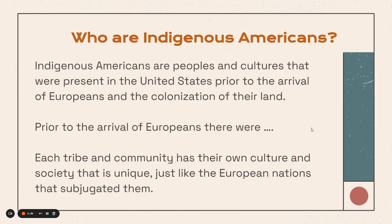Who are Indigenous Americans? They are people and cultures that were present in the United States prior to the arrival of Europeans and the colonization of their land. Prior to the arrival of Europeans, there were many tribes and many peoples. Some say there were about 10 million Native Americans in North America, with some more conservative estimates placing that number lower. However, there were many of them spread across the United States, and each tribe and community had their own unique culture and society, just like the European nations that ended up subjugating them.